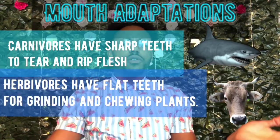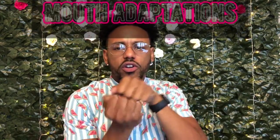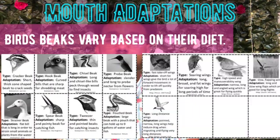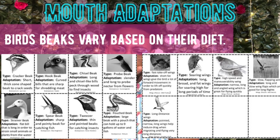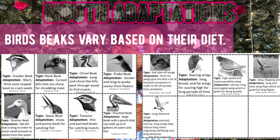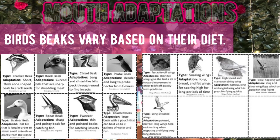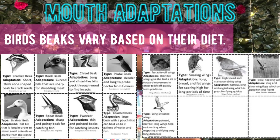Now you might be thinking: what about birds? Because they don't really have sharp teeth or grinding teeth — they have beaks. The beaks of birds vary according to their diet, so they'll have smaller or bigger beaks depending on what they eat and where they get it from. For example, the crane has a really long, narrow beak to reach deep into water for small fish, whereas a finch — a much smaller bird — has a short, powerful beak for cracking nuts and seeds.